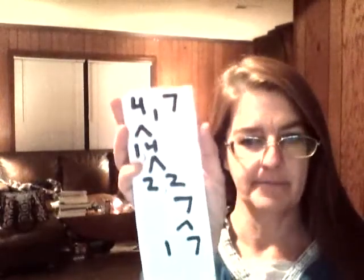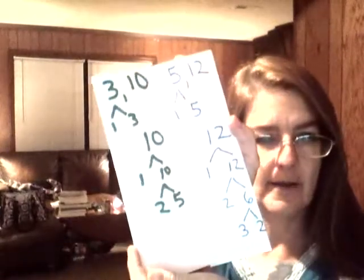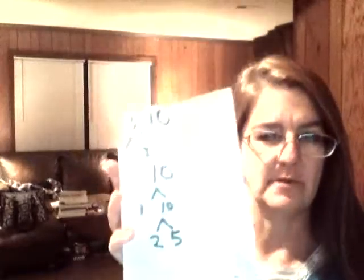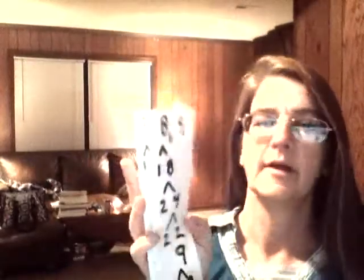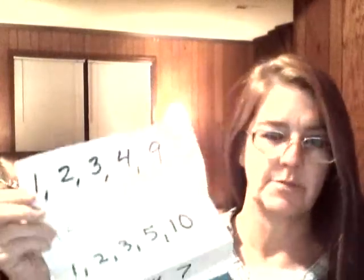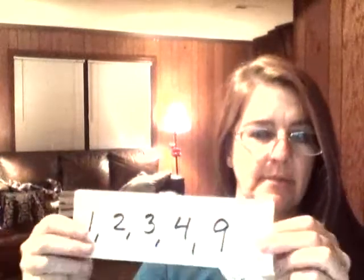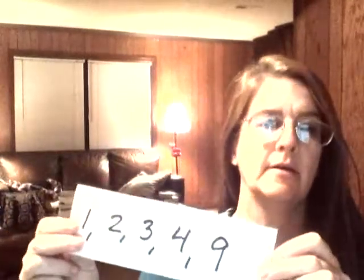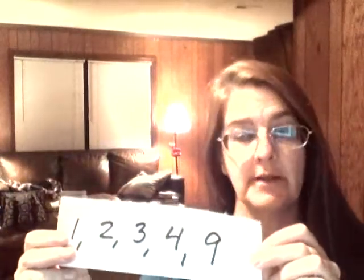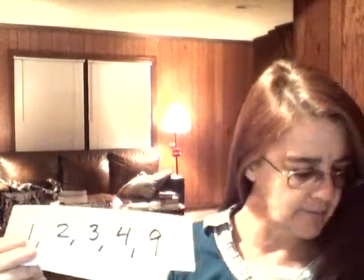If you were to use just the examples of 4 and 7, 3 and 10, 5 and 12, and 8 and 9, you would discover these to be your multiples for 4 and 7. It would be 1, 2, and 4, obviously. And for 7, only 1 and 7.